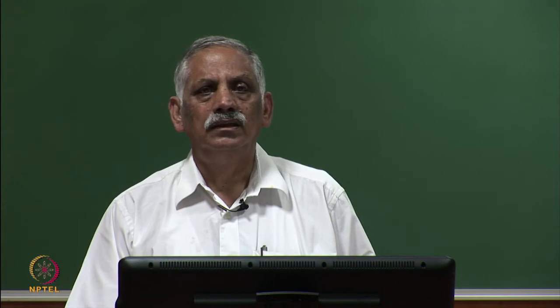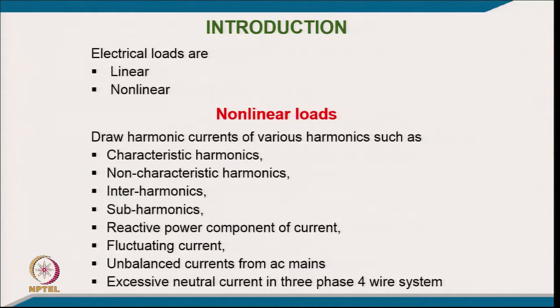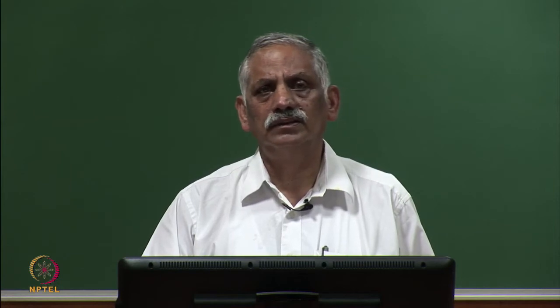In a three-phase four-wire system, another issue is excessive neutral current. In a linear balanced load, neutral current would ideally be zero. But when harmonics are present, even with equal three-phase load currents, the neutral current can be excessive — sometimes even greater than the phase current. We will explore this through examples.